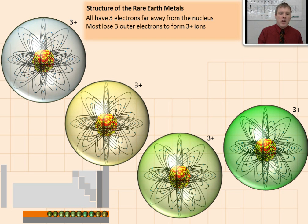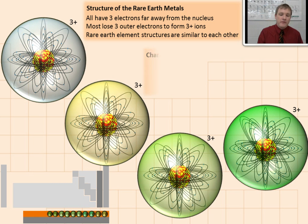And here's what that causes. Because they all form the same ion, they are all very similar to one another. Because the charge of all of the rare earth elements tends to be the same, they're very similar in properties and therefore they're difficult to separate from one another.